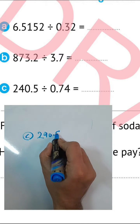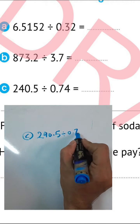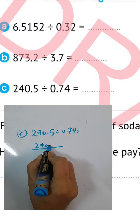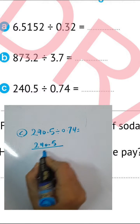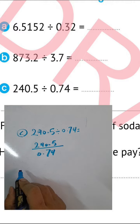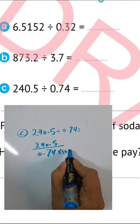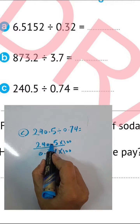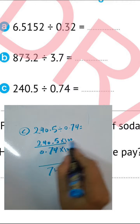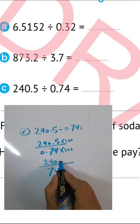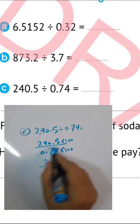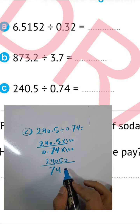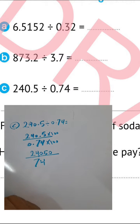Letter C: 240.5 divided by 0.74. We must cancel the point in the denominator by multiplying by 100. Write 74 in the denominator and move the point right-hand side by two places in the numerator, giving 24050 divided by 74. We will use long division.